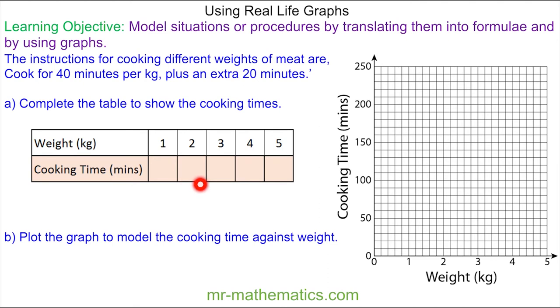So do you want to try and complete this table of results and then plot the graph using the solutions? You can pause the video and resume it when you're ready. So when we have a cooking weight of one kilogram, we have one lot of 40 minutes plus the extra 20 minutes. So we have 40 plus 20, which is 60 minutes.